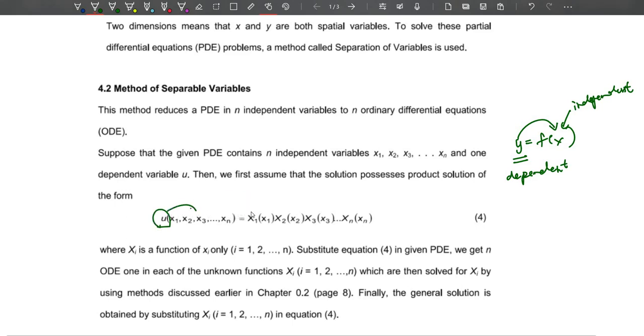The same goes here: u(x_1, ..., x_n) means u depends on the value of x. We will have X_1(x_1), X_2(x_2), X_3(x_3) until X_n(x_n).